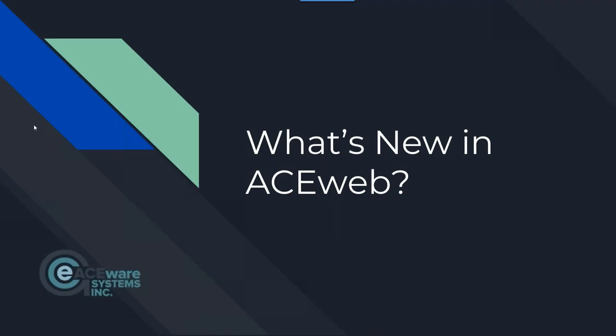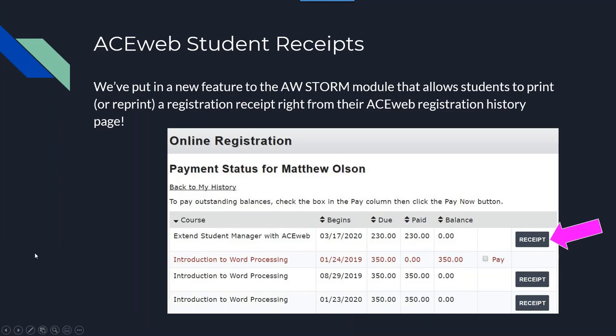Alright, for those of you who were at the AceWeb session at conference, some of this will be a review, but we'll go over everything for the benefit of those who weren't there, and there will be a few new things that weren't shown at conference. One of the features is an extension to the STORM module — STORM is Student Online Reporting Mechanism — which allows your users to get transcripts and certificates.